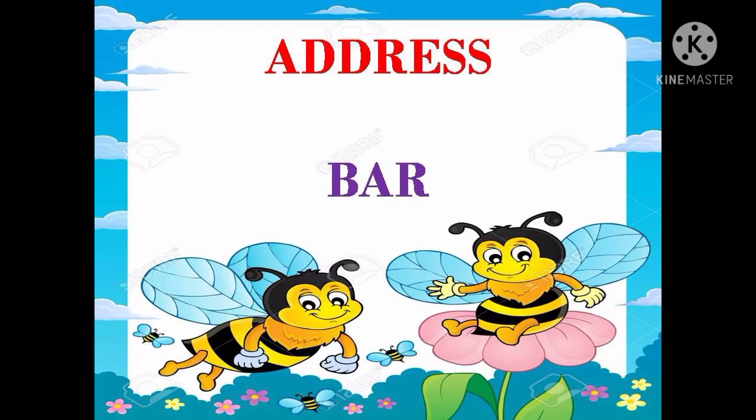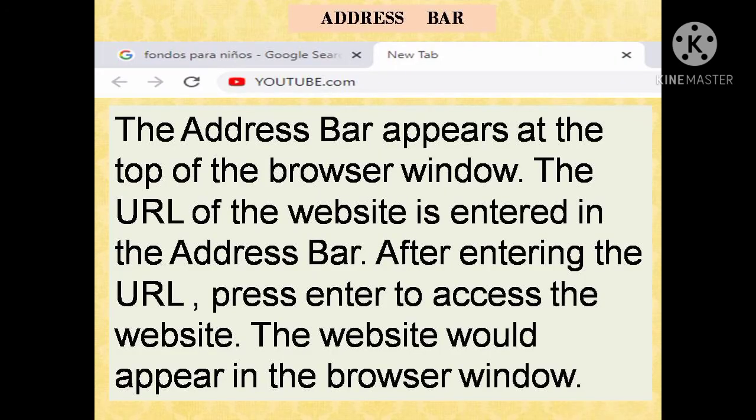The first component is the address bar. When you open a web browser, the address bar appears at the top of the browser window. The URL of the website is entered in the address bar. After entering the URL, press Enter to access the website, and the website will appear in the browser window.